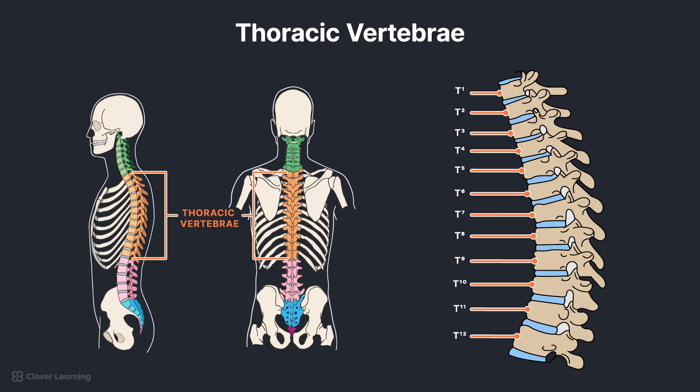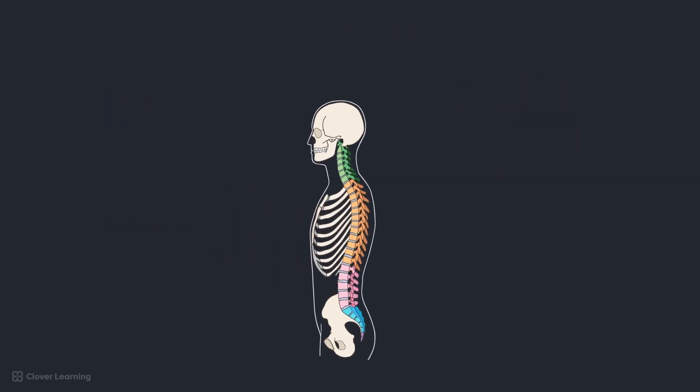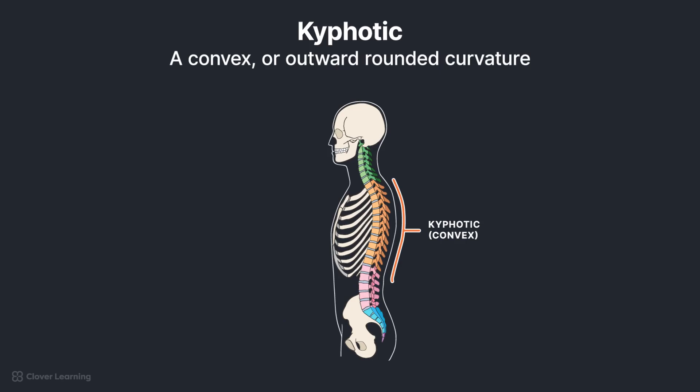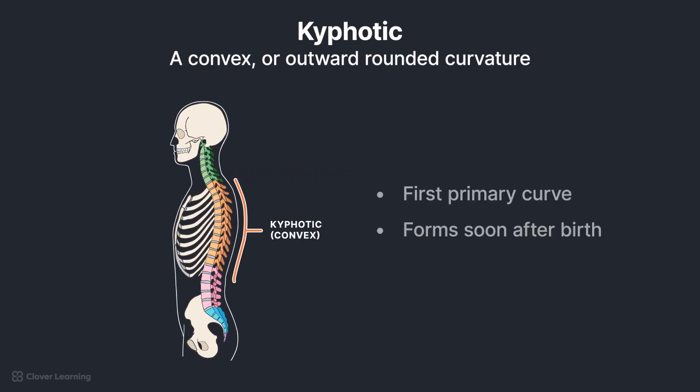Vertebrae are often labeled and referred to by the letter of the region followed by the vertebrae number. For example, in the thoracic region, the individual vertebrae are referred to as T1 through T12. The spine is composed of a series of AP curves. From the posterior perspective, the thoracic region has a convex or outward-rounded curvature known as kyphotic. The curve of the thoracic region is known as the first primary curve because it forms soon after birth.